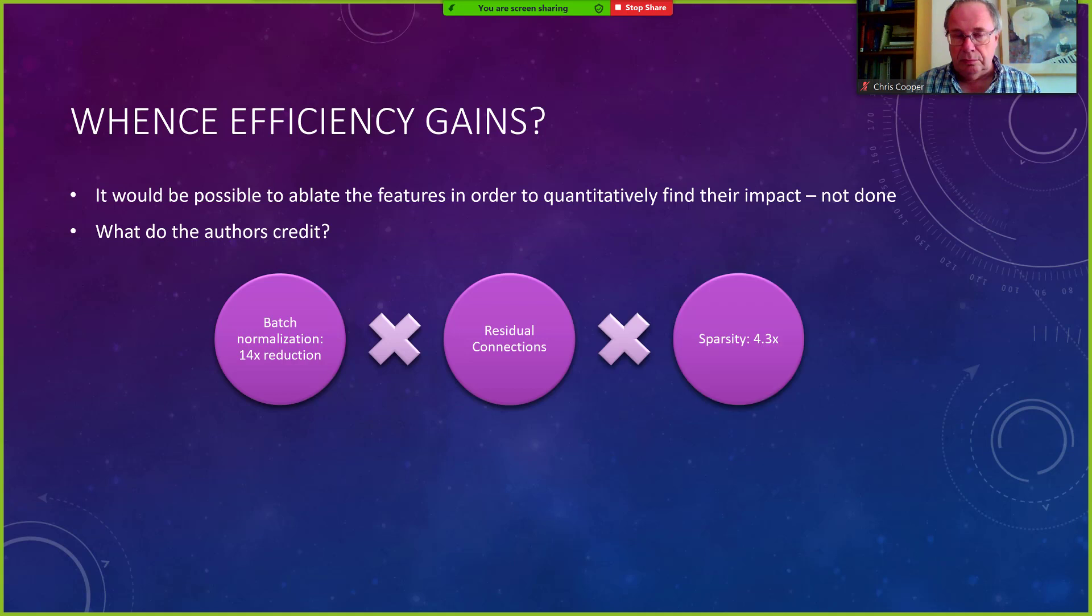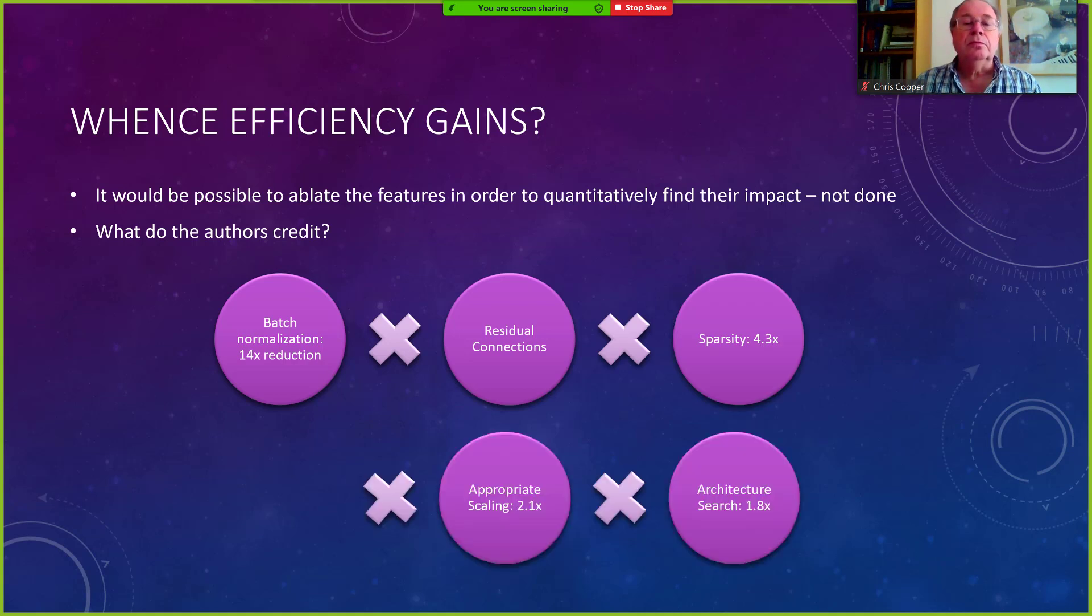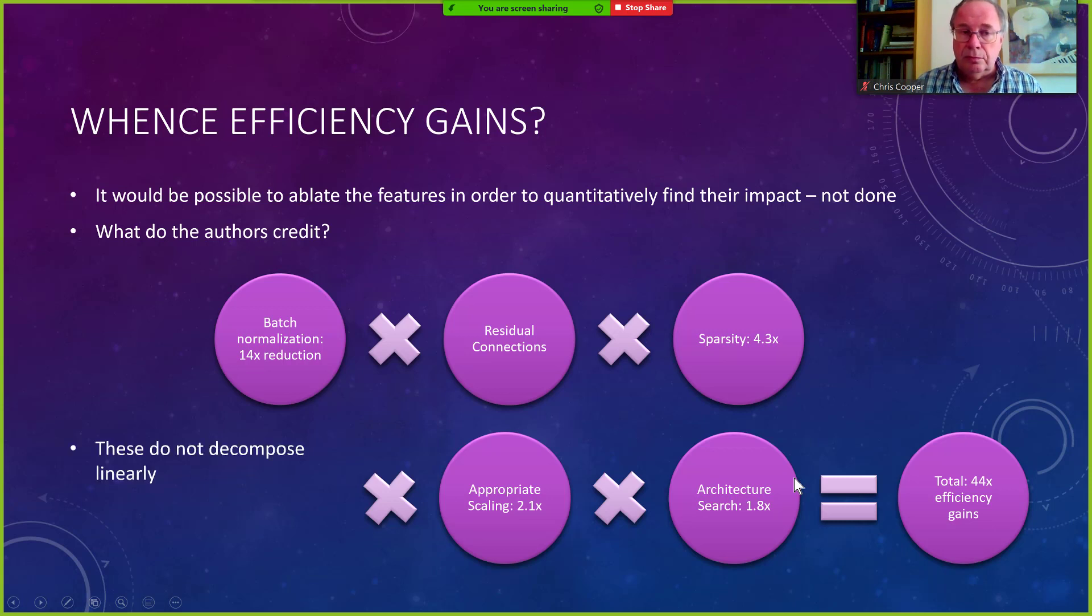So they have batch normalization, residual connection, sparsity, appropriate scaling, architecture search and all that comes out to 44% efficiency gain. But these numbers are very, here it looks like you can just multiply them basically, but they probably do not decompose linearly. And there are probably more things than just saying that GoogleNet has batch normalization is 14 times better. You probably can't do that really. Also, you should note that the authors probably want to emphasize that their new thing is the best thing since sliced bread, so that's also a confounding factor here.